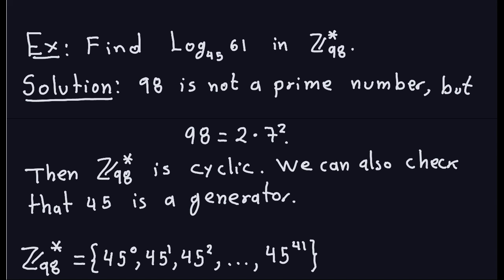Hello and welcome again. We will talk about another example of how to compute discrete logarithms using the baby-step giant-step algorithm. In the previous video we saw one example where the number n-star is a prime number; in this case it's not going to be prime.